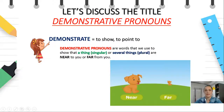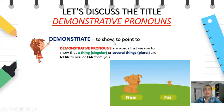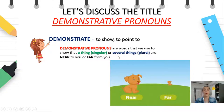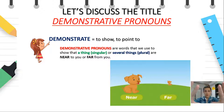Let's continue. First, we are going to discuss the title — demonstrative pronouns. The very word 'demonstrative' means to show, to point to something. So, demonstrative pronouns are words that we use to show that a thing — one thing, singular — or several, two or more things, plural — are near to you or far from you.